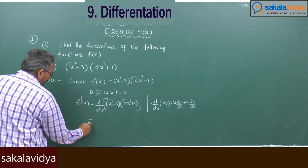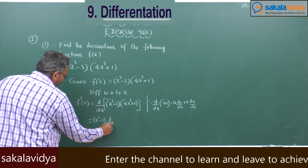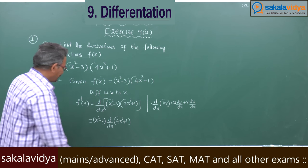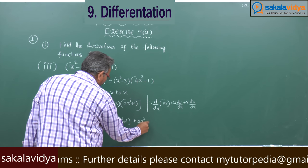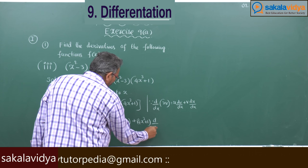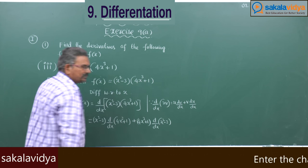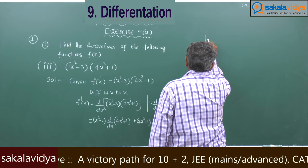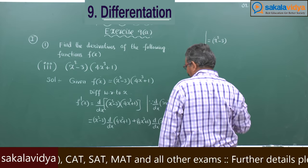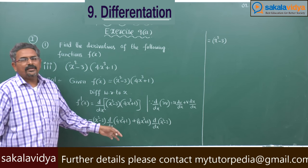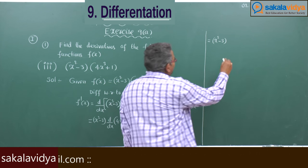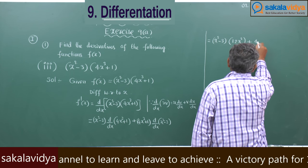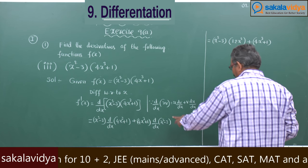So this can be written as (x² minus 3) into d/dx of (4x³ plus 1), plus (4x³ plus 1) into d/dx of (x² minus 3). The derivative of 4x³ plus 1 is 12x², and the derivative of x² minus 3 is 2x.